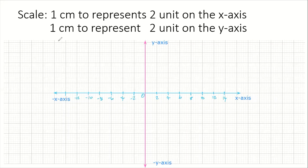Going to the y-axis now — it's the same scale, one centimeter to represent two units. So we need to indicate where the one centimeter marks are. From the origin, five of the small boxes is equivalent to one centimeter. We count off: that takes us to this point, that point, and that point going upward.